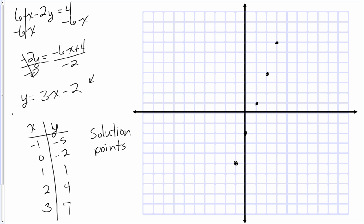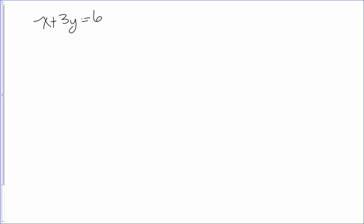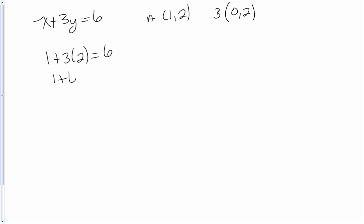Say we're given the equation x plus 3y equals 6, and we want to know if the points one, two and zero, two are solution points. We'll call them point A and point B. For point A, we plug in one and two: one plus three times two equals six, so one plus six equals six, which gives seven equals six. That is not true, so A is not a solution.